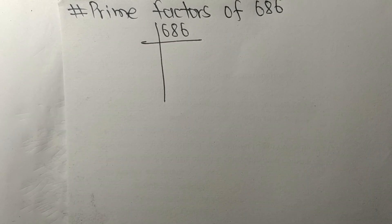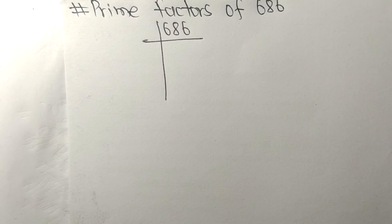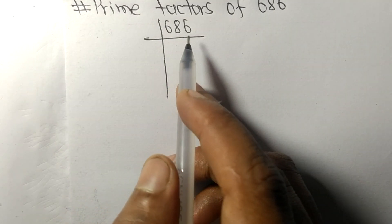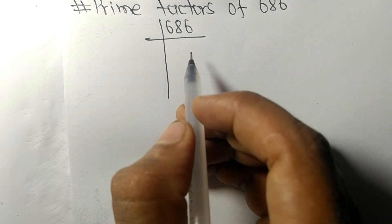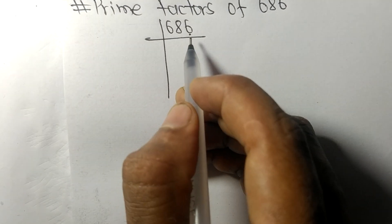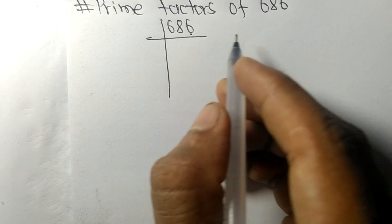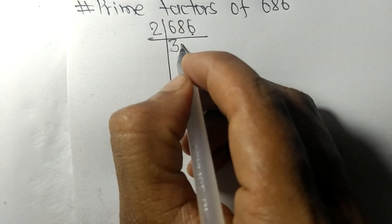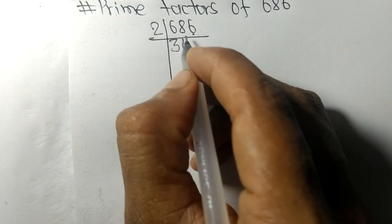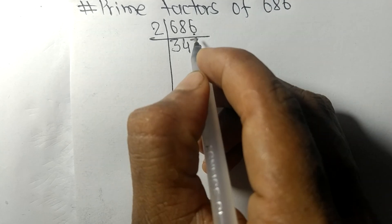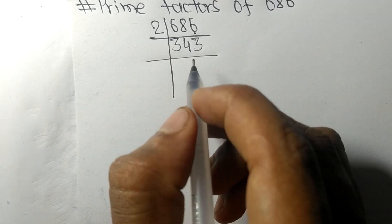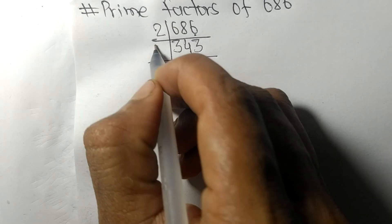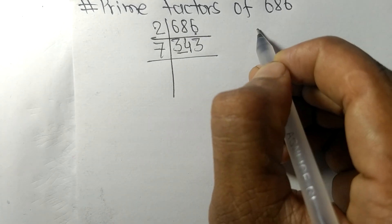Today in this video we shall learn to find the prime factors of 686. It contains an even number 6, so this whole number is divisible by 2. 2 times 3 is 6, 2 times 4 is 8 — so now we got 343, which is exactly divisible by 7.